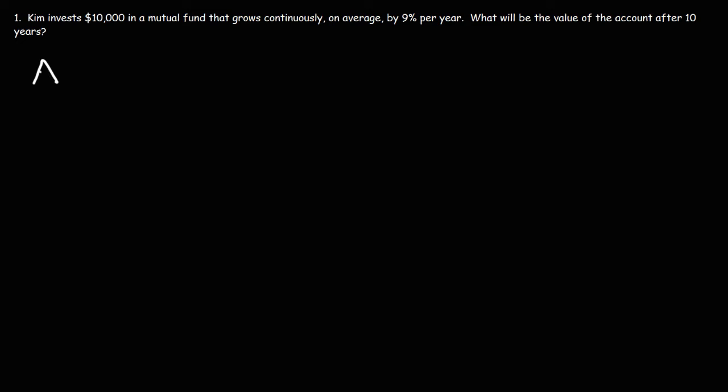To answer this question we need to use a specific formula. A is equal to P times E raised to the RT. So A is the future value of the account after some time. P is the principal, the amount that's invested in the account right now. R is the interest rate as a decimal and T is the time in years.